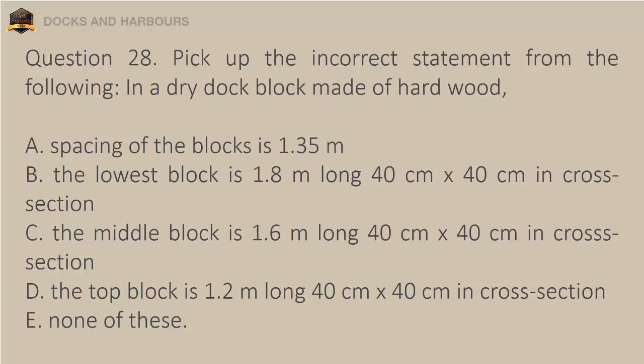Question 28. Pick up the incorrect statement from the following. In a dry dock, blocks made of hardwood: a. Spacing of the blocks is 1.35 meters. b. The lowest block is 1.8 meters long, 40 cm by 40 cm in cross-section. c. The middle block is 1.6 meters long, 40 cm by 40 cm in cross-section. d. The top block is 1.2 meters long, 40 cm by 40 cm in cross-section. e. None of these. The correct answer is option E: None of these.